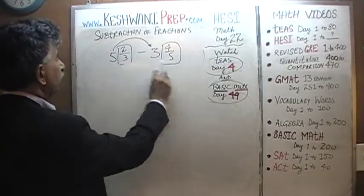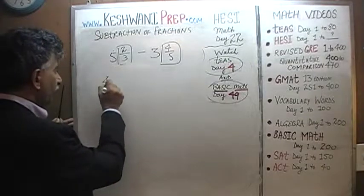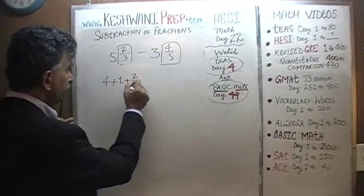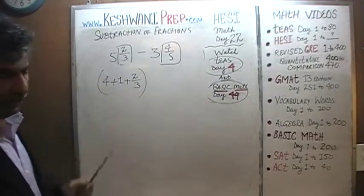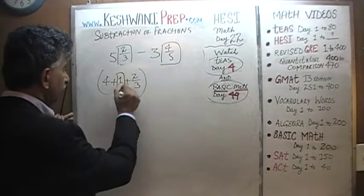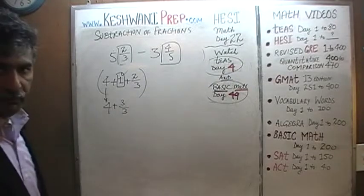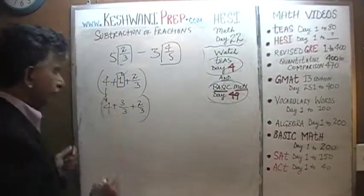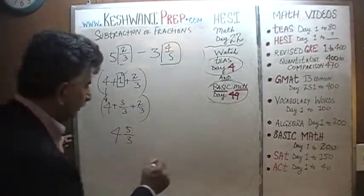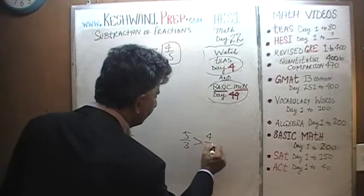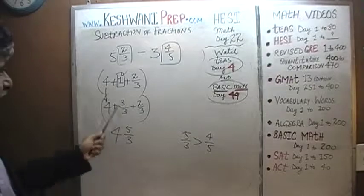Here is how it goes. We are going to write our 5 as 4 plus 1, so the first quantity is 4 plus 1 plus 2 thirds. That 1 in the middle we rewrite as 3 over 3. So we have 4 plus 3 thirds plus 2 thirds — that is 5 thirds. The original 5 and 2 thirds becomes 4 and 5 thirds. Now 5 thirds is in fact more than 4 fifths, so we can proceed with the subtraction. Instead of 5 and 2 thirds, we write 4 and 5 thirds.